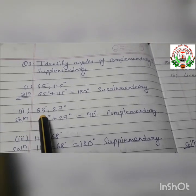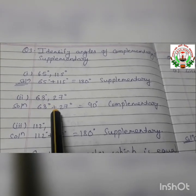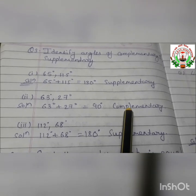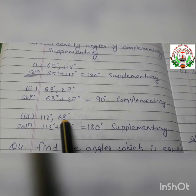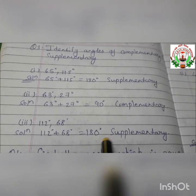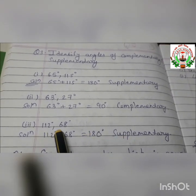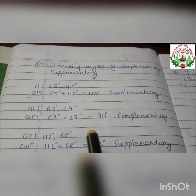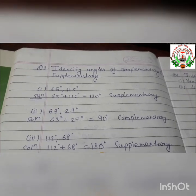For 63 degrees added with 27 degrees, the answer is 90 degrees, so that is a complementary angle pair. For 112 degrees added with 68 degrees, the answer is 180 degrees, so it is a supplementary angle pair. By adding the pair of angles we can easily identify whether it is complementary or supplementary.